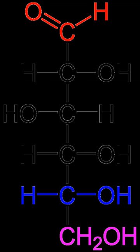Monosaccharides are classified according to three different characteristics: the placement of its carbonyl group, the number of carbon atoms it contains, and its chiral handedness. If the carbonyl group is an aldehyde, the monosaccharide is an aldose; if the carbonyl group is a ketone, the monosaccharide is a ketose. Monosaccharides with three carbon atoms are called trioses, those with four are called tetroses, five are called pentoses, six are hexoses, and so on. These two systems of classification are often combined. For example, glucose is an aldohexose, ribose is an aldopentose, and fructose is a ketohexose.